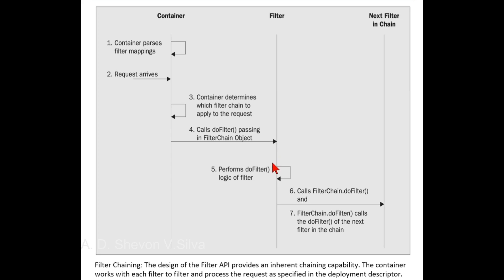Four: the filter chain performs the doFilter logic. Five, six: the filter chain completes the doFilter logic and calls the doFilter method in the filter chain object reference, passing it the request and response. All filters are required to do this because all filters are inherently chaining. Seven: the logic in the doFilter method of the filter chain object calls the doFilter method of the next filter in the chain.